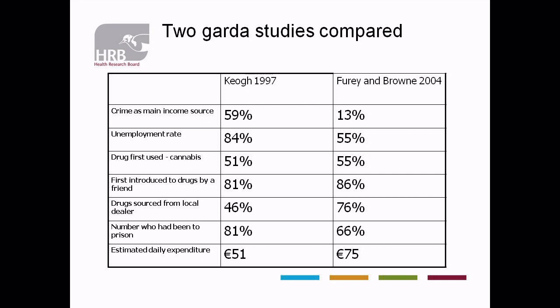Two studies were done — one that got huge attention in 1997, a Garda study where they asked a number of people known to be dependent drug users a series of questions, and a follow-up study done in 2004 by the Garda Research Unit. Those who found crime as their main source of income: in 1997 it was 59%, in 2004 it was 13%. At that time in 2004 there was a huge increase in employment — unemployment was effectively gone. What that tells us is that people who are dependent on drugs can also maintain a job. The unemployment rate was far less in the latter study than in 1997.